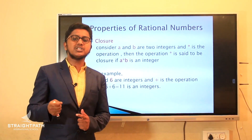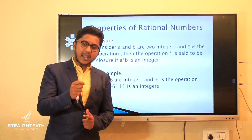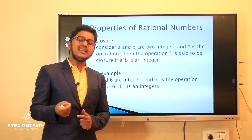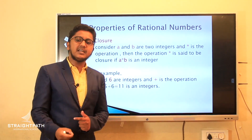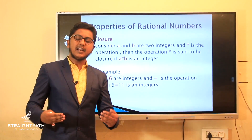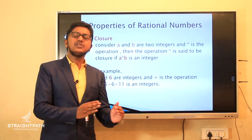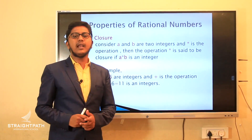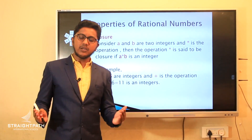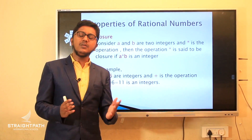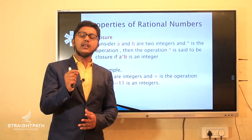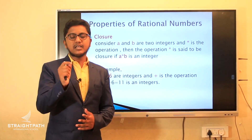When checking closure under addition, if a by b plus c by d is a rational number, then closure property is satisfied under addition. Similarly, a by b minus c by d will be another rational number, so closure property is also satisfied under subtraction.